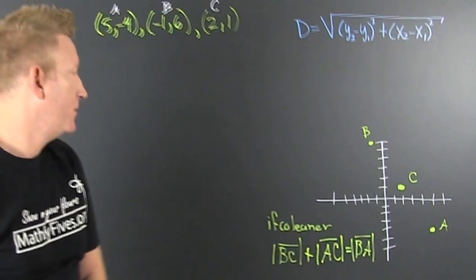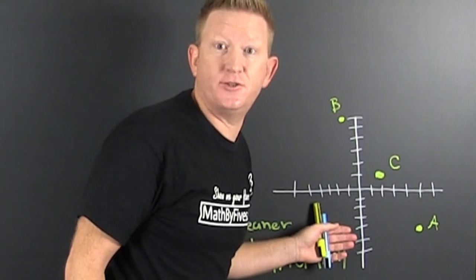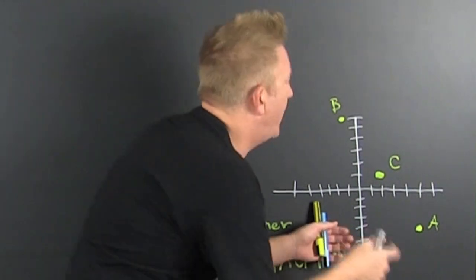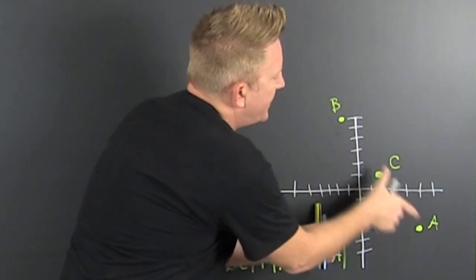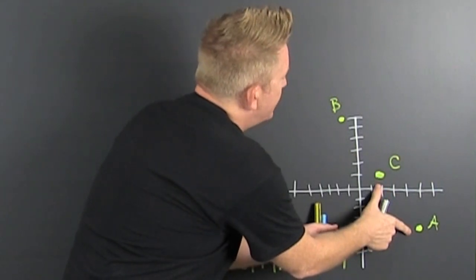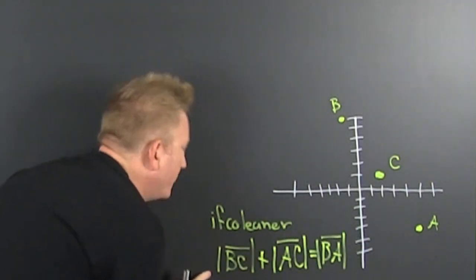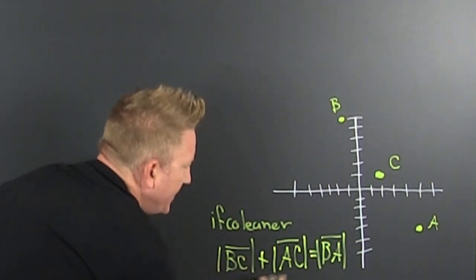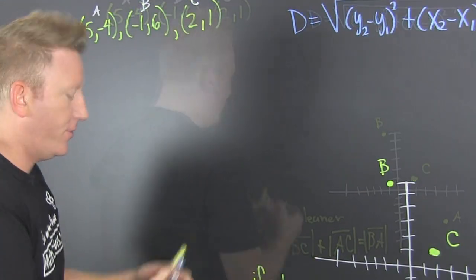So first, why don't we graph them? Yeah, they look like they're on a straight line but how are we going to tell? Well, if BC plus CA is the same as BA then they're collinear. We're looking at that. If BC plus AC is equal to BA then they're collinear.